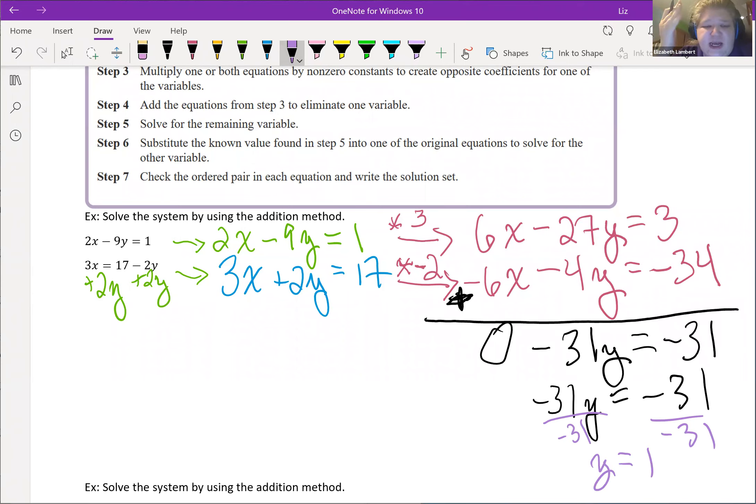We get y is positive 1. That is only half the answer though. Now we must solve for the other half. We have y, we need x, so we need to take that back to an equation. Doesn't matter which equation. I am going to go with this one because it's almost solved for x, so that'll be 3x equals 17 minus 2 times 1.